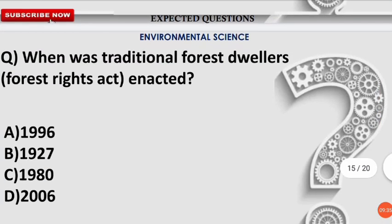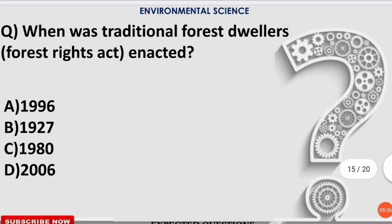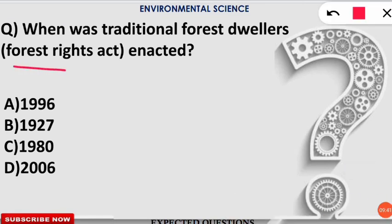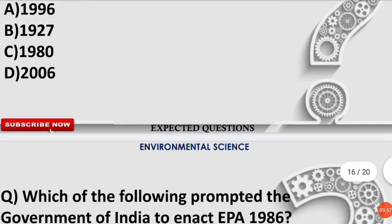The next question: when was the Traditional Forest Dweller (Forest Rights) Act enacted in India? The correct option is D — the Forest Rights Act was enacted in 2006.